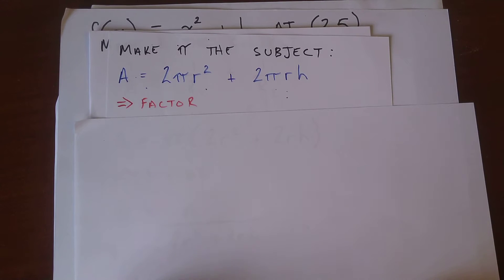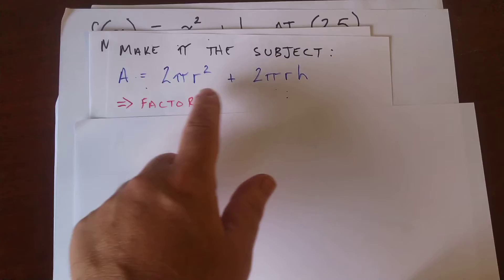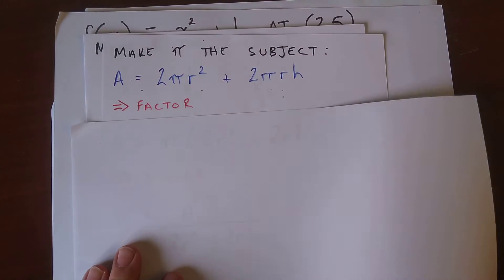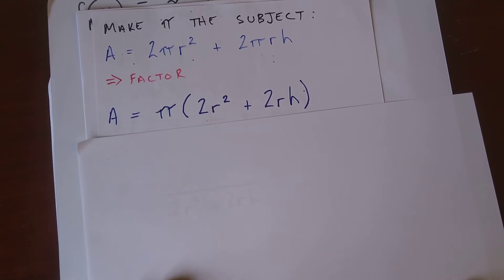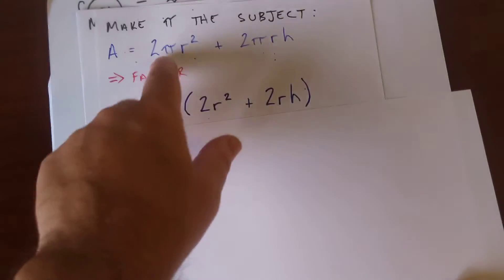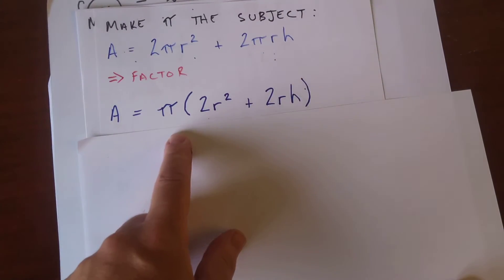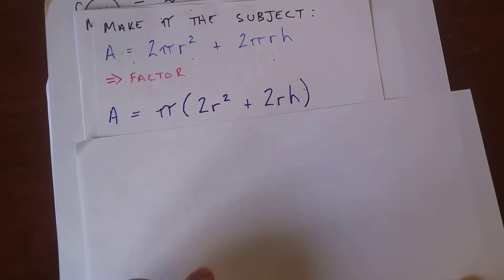But the first step is you want to factor it. If you factor out π, then you're left with this. I tried to color code it to make it easier for you to see. So we're left with this. I factored out π, and now it's just a simple division problem.